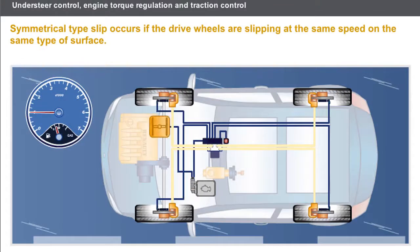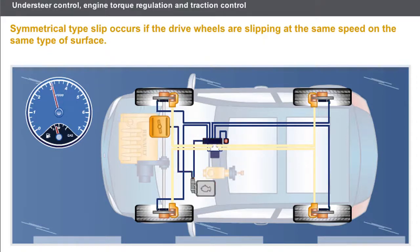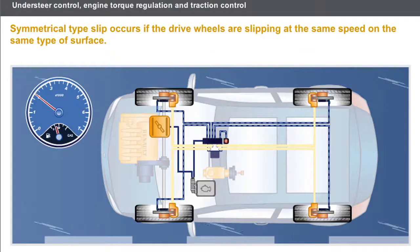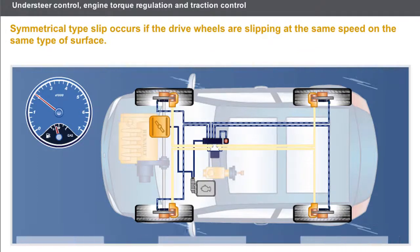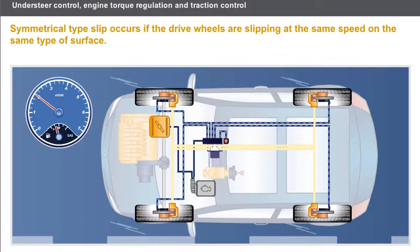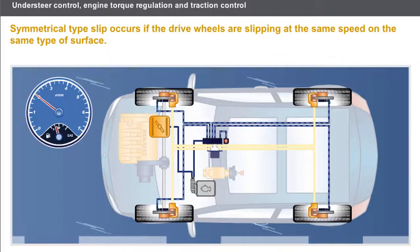Symmetrical type slip occurs if the drive wheels are slipping at the same speed on the same type of surface. The computer for the electronic stability program sends a command to the injection computer to reduce the engine torque. The request is maintained until traction is re-established.